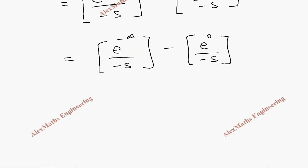And e power minus infinity is 0, so 0 by minus s which is totally 0. And minus of anything power 0 is 1, and we have minus s. So totally the first term is 0, and minus or minus becomes plus.